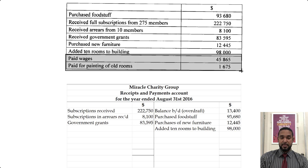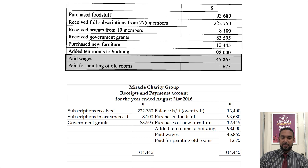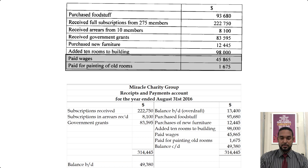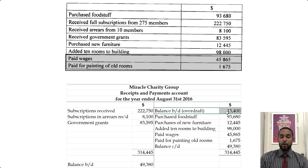Everything after that is payments — paid wages and paid for painting old rooms — so both of those go on the credit side. Once we populate those figures, we're going to have a balance carried down from the credit side and brought down on the debit side. We moved from having an overdraft back to having a regular debit balance — we got enough money in to offset the overdraft, pay it off, and cover all the expenses.